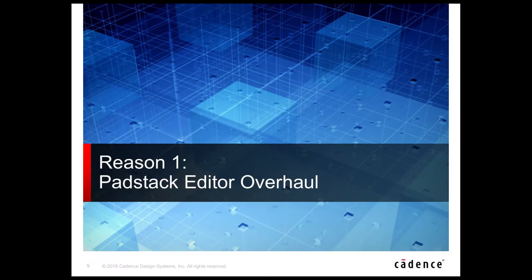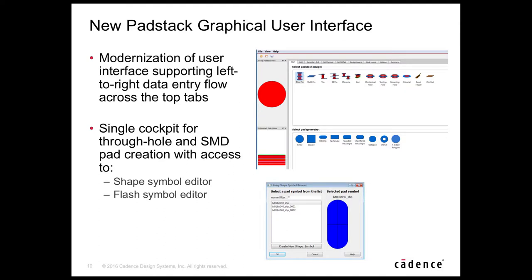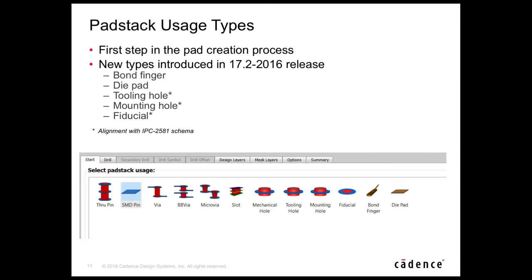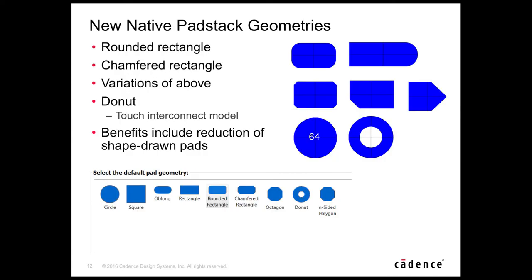Reason number one is the padstack editor overhaul — the suggested starting point for evaluating 17.2. A new modern user interface supports a left-to-right data flow across top tabs. It is a single cockpit for through-hole and SMD pad creation, with access to both the shape symbol editor and the flash symbol editor. Five new attributes have been introduced: bond finger, die pad, tooling hole, mounting hole, and fiducial. The bottom three align with the IPC 2581 schema, enabling readers to process them correctly.